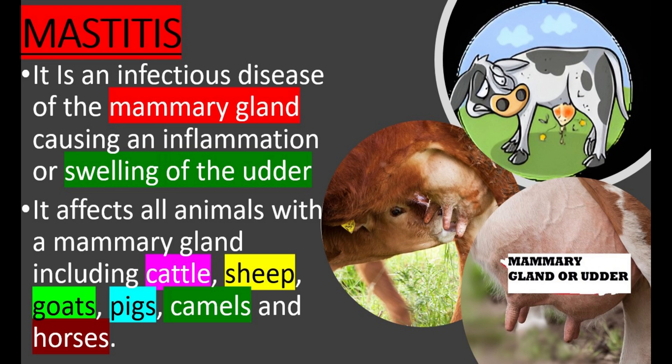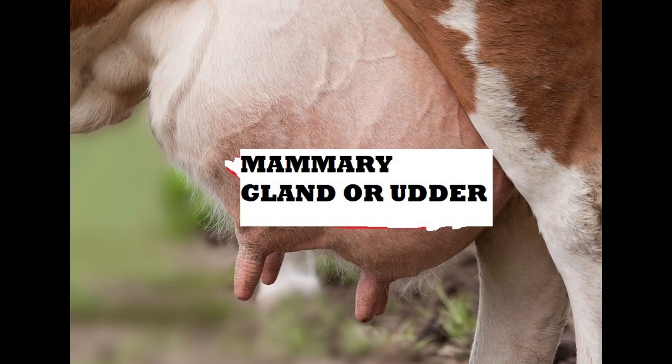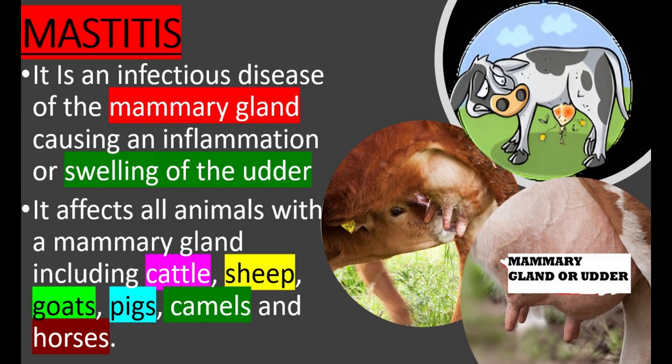Mastitis is an infectious disease of the mammary gland causing an inflammation of the udder. It affects all animals with a mammary gland, including cattle, sheep, goats, pigs, camels, and horses.